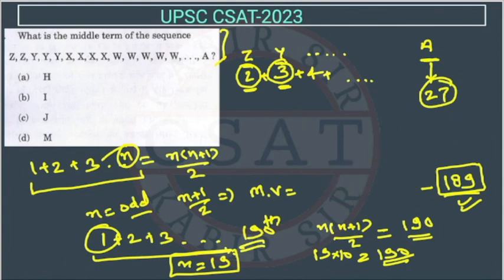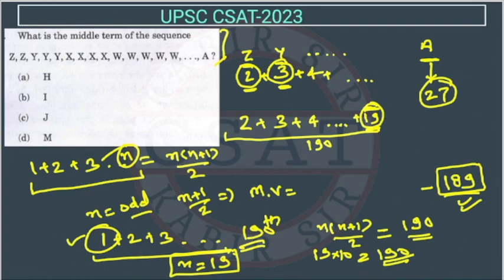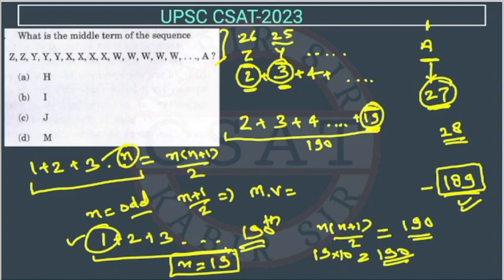We assumed 1 here. Z is coming twice, Y is coming thrice, and this keeps going. We are getting n = 19, so the 19th letter from the reverse end corresponds to some letter. Notice the pattern: Z represents letter 26 and repeats 2 times — 26 + 2 = 28. Y represents letter 25 and repeats 3 times — 25 + 3 = 28. A represents letter 1 and repeats 27 times — 1 + 27 = 28. Their sum always equals 28.